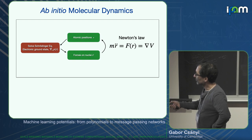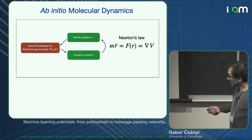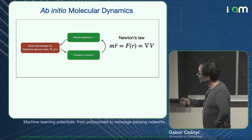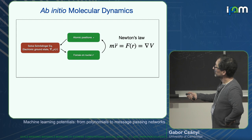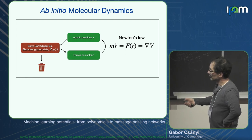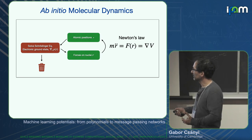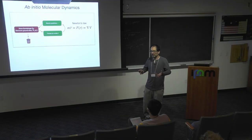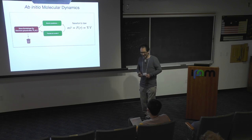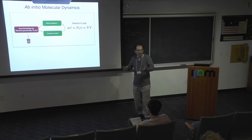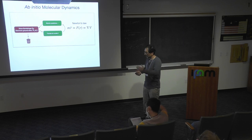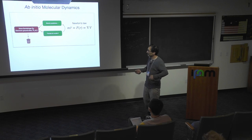What is DFT molecular dynamics? You have atomic positions, you solve the Schrödinger equation typically with DFT in the mean-field approximation, you get wave functions and electronic density, from that you derive forces on the nuclei, and you use Newton's law to propagate the atomic positions. Then you essentially throw away the information that was so difficult and costly to get — the eigenvalues, densities, eigenvectors. From a physical point of view, the information itself is thrown away.